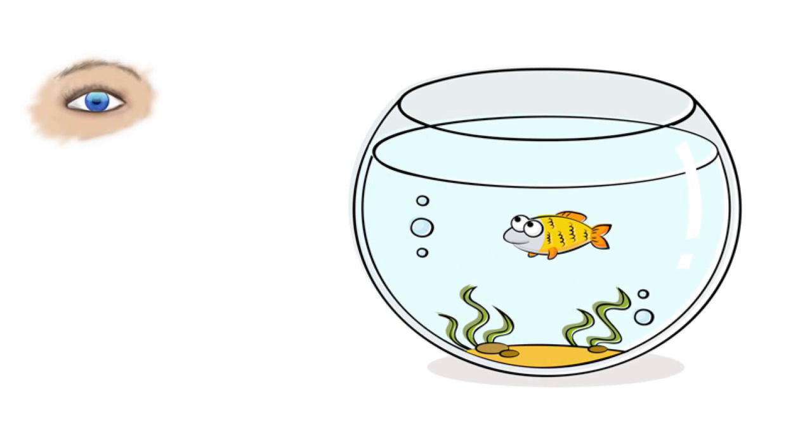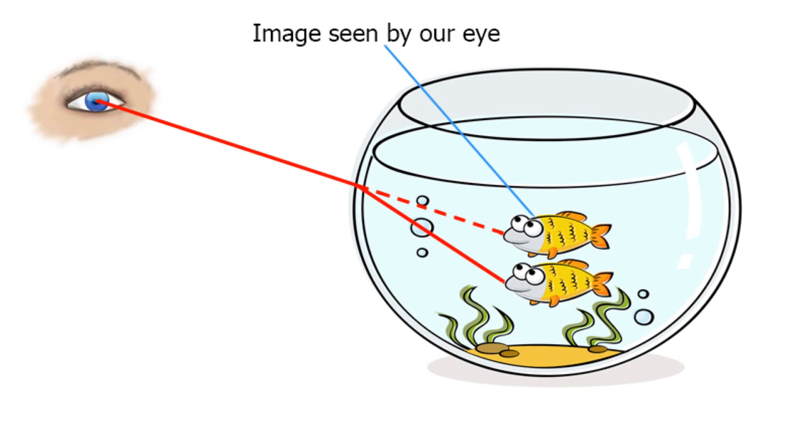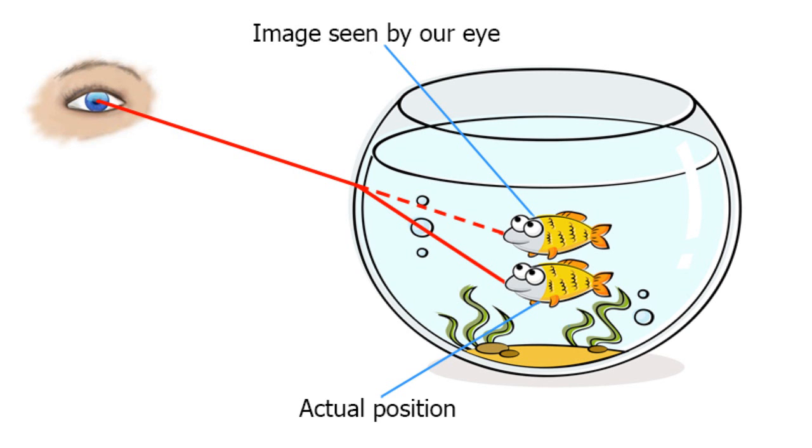We are most familiar with light refraction when looking into or out from water. Our eyes might see something in water but the light ray has changed in direction as it passes from the water to the air, meaning that what we are actually seeing is a virtual image and the object is in a different place.